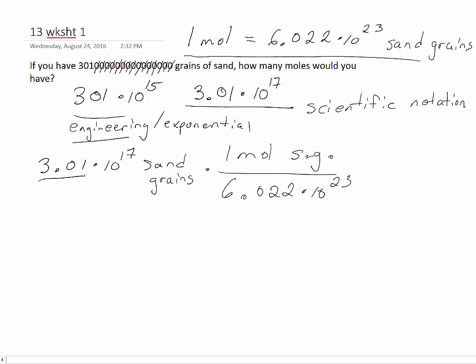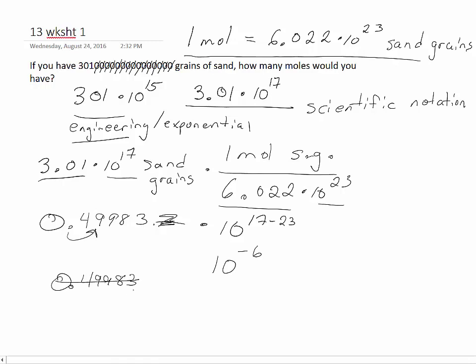Again, we can look at just the coefficients, and when we divide the coefficients, we get almost exactly one half. We get 0.49983 and some other stuff. We also can look at the exponents. When we divide exponents like this, the rule for exponents when you do division is that you subtract them, so 17 minus 23. So what is 17 minus 23? 17 minus 23 is 10 to the negative 6th. We also can't really leave this with the decimal behind the 0, if we want scientific notation, so we're going to move the decimal 1 to the right. When we move the decimal 1 to the right, the exponent goes down 1, so this becomes 4.9983 times 10 to the negative 7th.